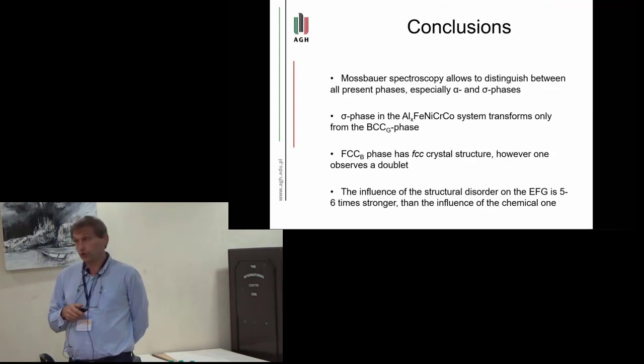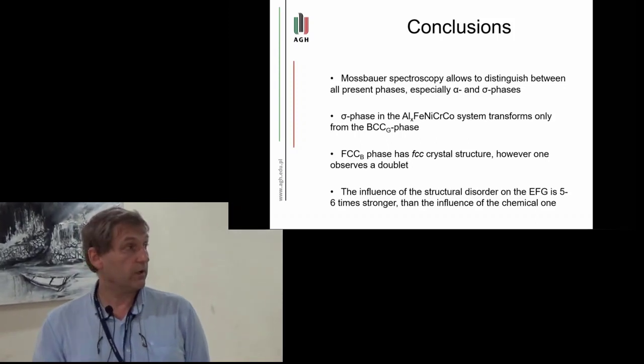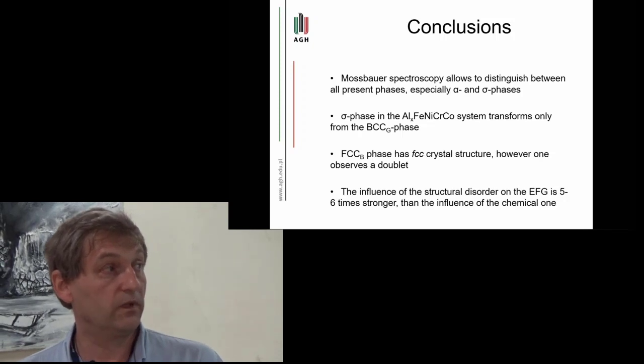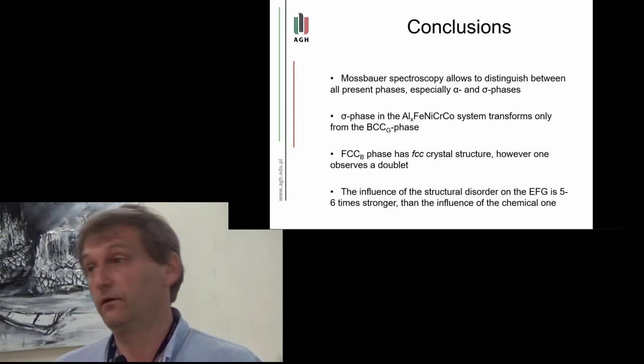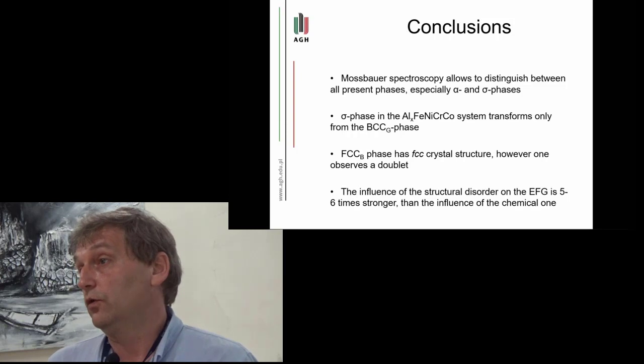So conclusions from my talk are that Mössbauer spectroscopy allows to distinguish between all present phases, especially between alpha and sigma phases which are present in the system. The sigma phase in this system transforms only from the BCC gray phase. It was also not clear from previous measurements because the sigma phase was observed experimentally and no one knew from which phase.